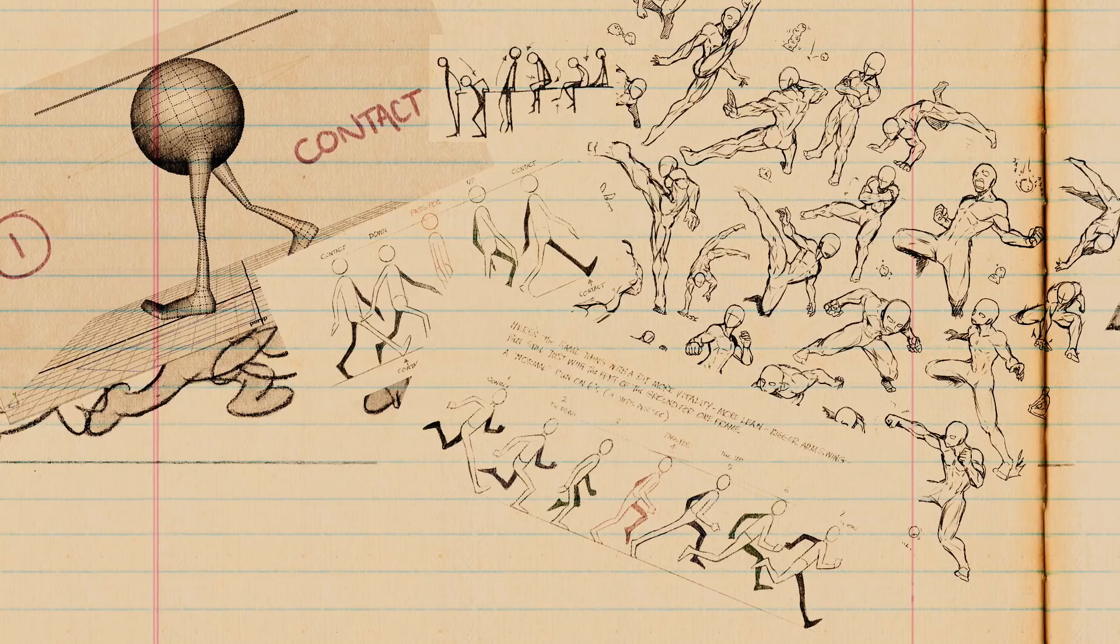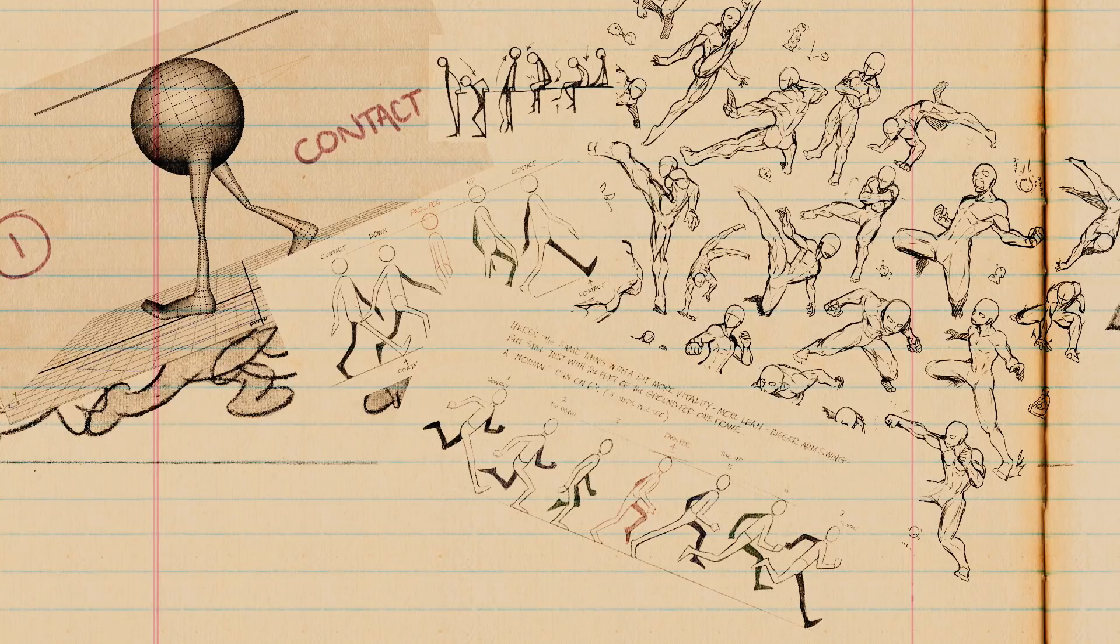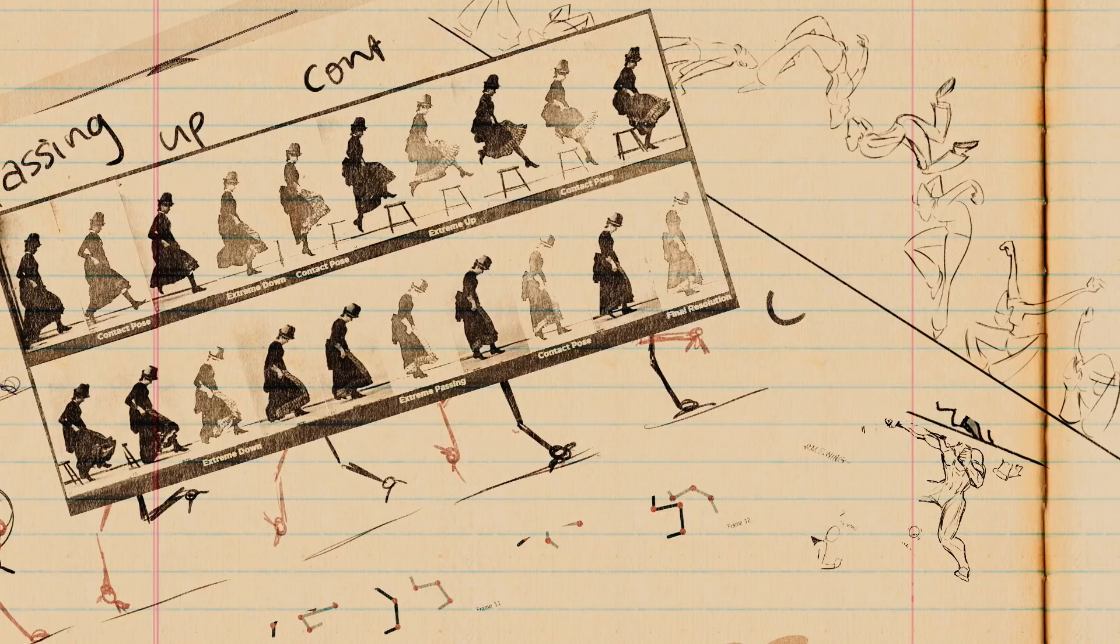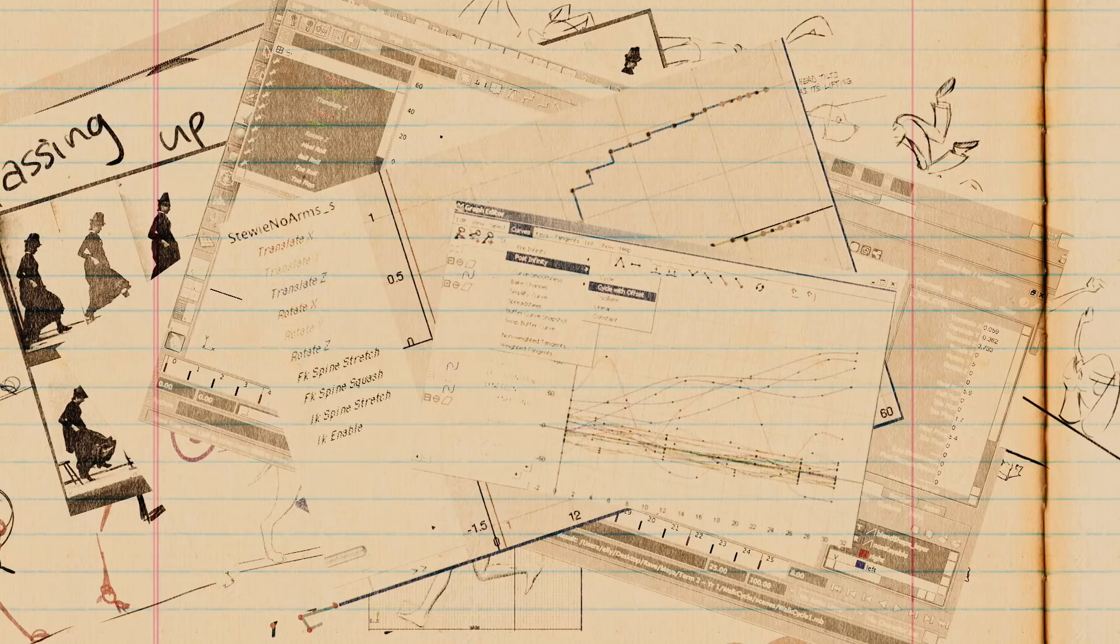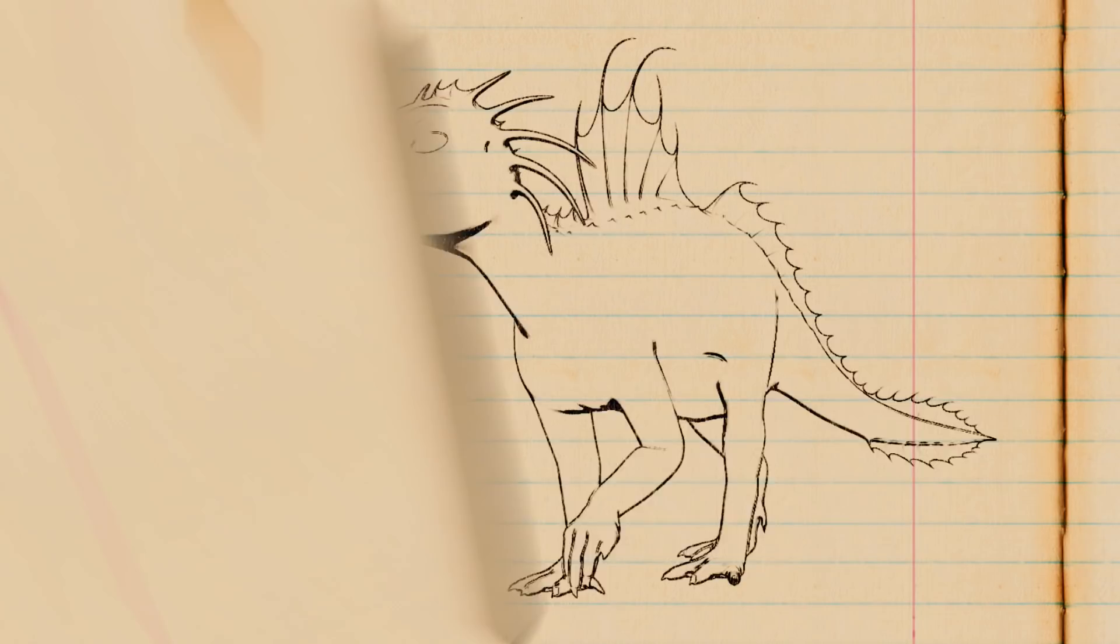From the outset, it completely removes the natural arcs of movement and timing from the process in favor of static poses. It also results in a million redundant keyframes and requires hours of cleanup. In production, time is money. So if pose-to-pose is so bad, how do we go about it?